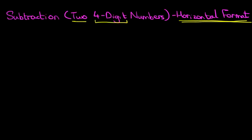Now let's have a look at our first example. What is 8672 - 4387?